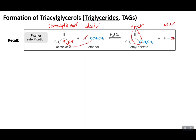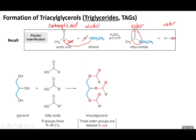With triglycerides, we are also going to have an alcohol, a carboxylic acid, and we're going to make an ester. The type of alcohol we encounter is going to be a glycerol. Looking at our glycerol molecule, we see carbon 1, carbon 2, and carbon 3 in skeletal structure. At each one of those carbons there is a hydroxyl group, which is why glycerol functions as our alcohol in this esterification reaction.